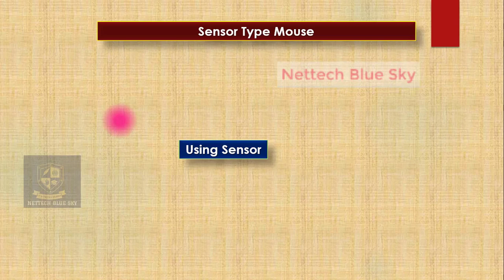Sensor type mouse uses one type of sensor. It detects your position — you do not need a touch screen and you do not need an optical mouse.